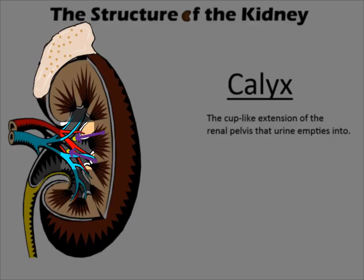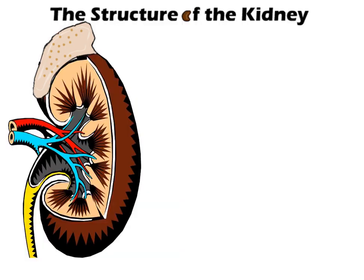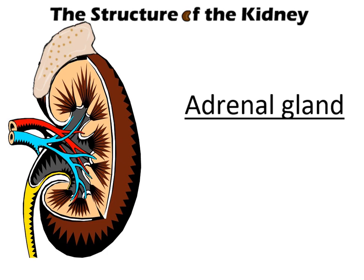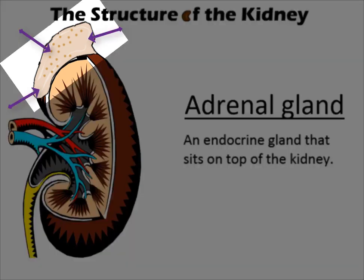Calyx: the cup-like extension of the renal pelvis that urine empties into. Adrenal Gland: an endocrine gland that sits on top of the kidney.